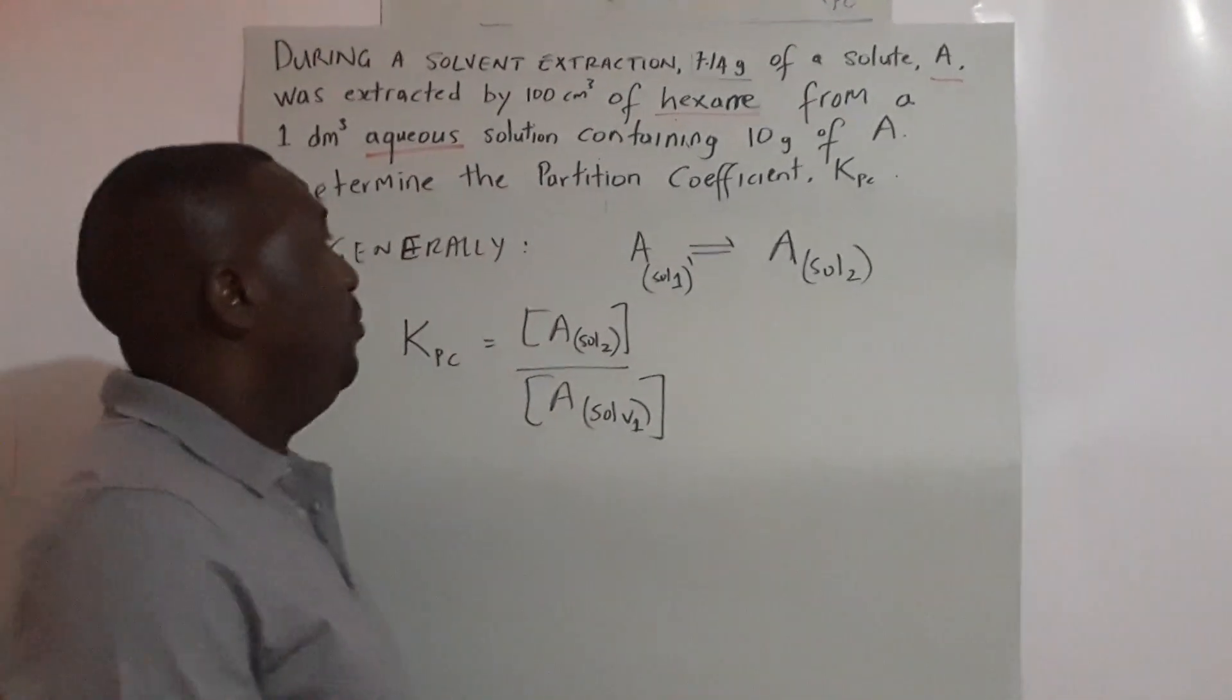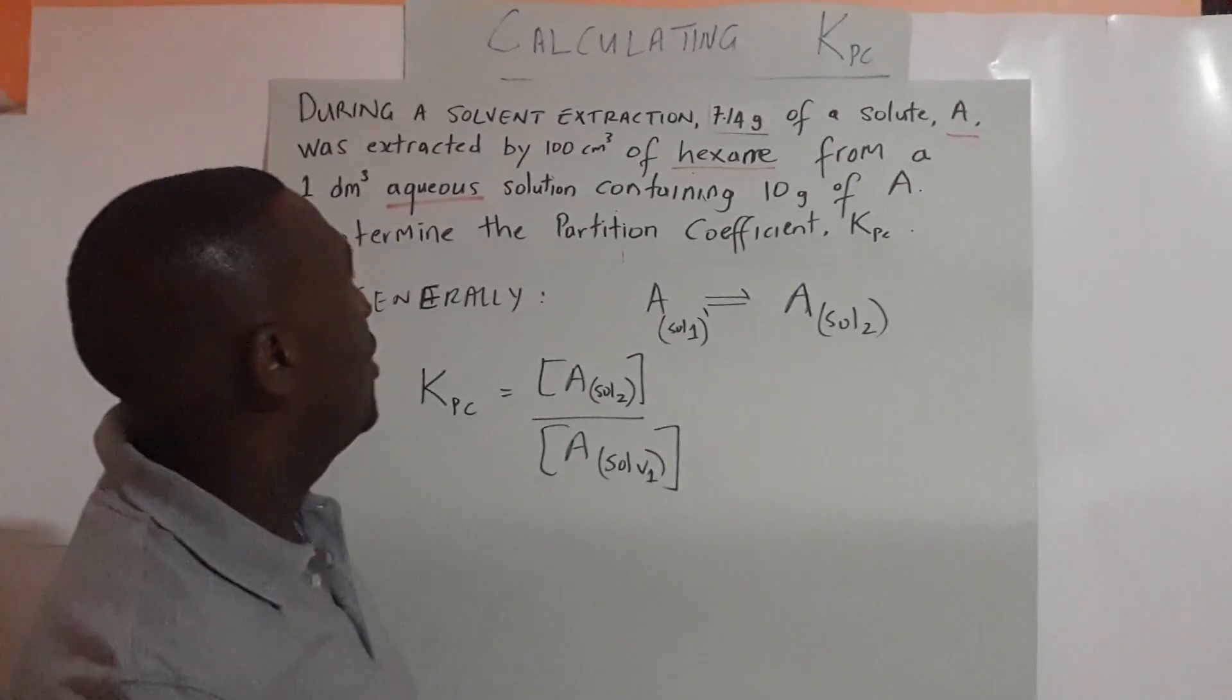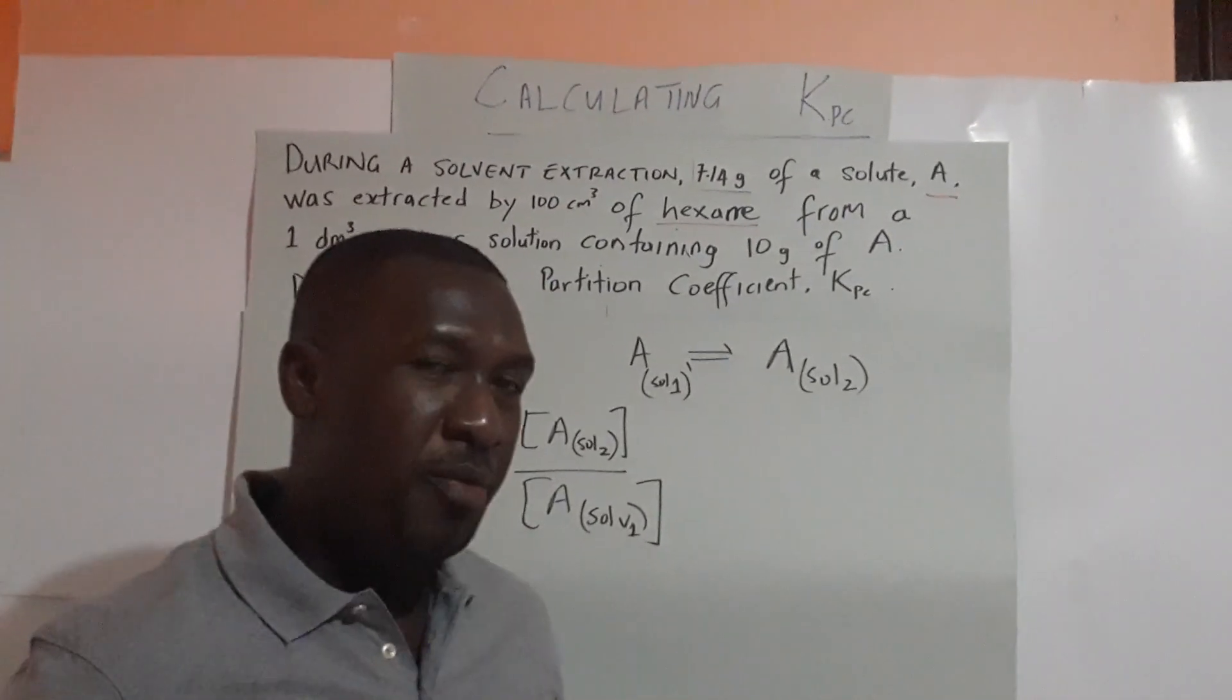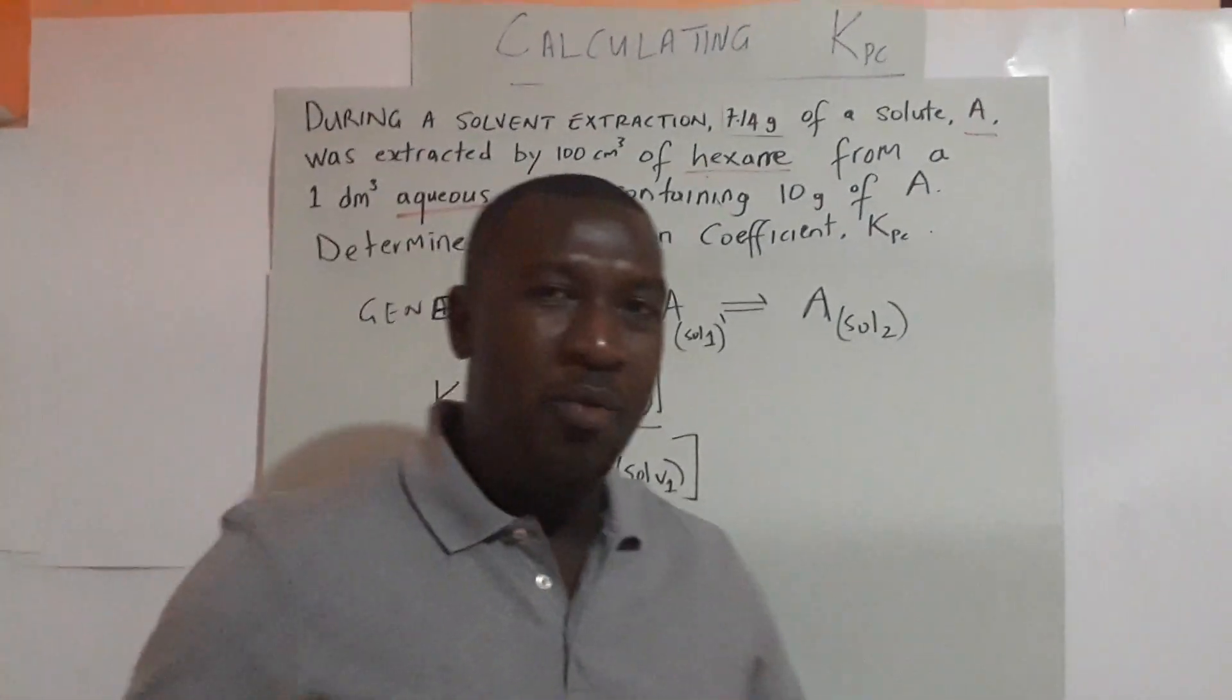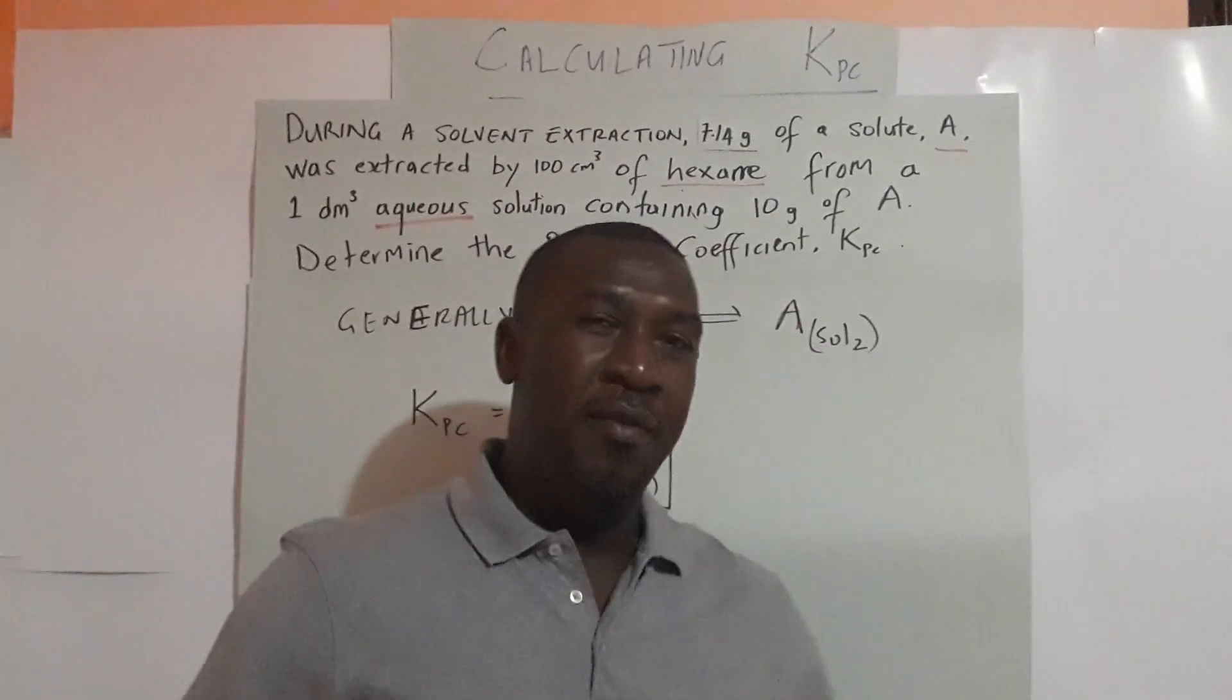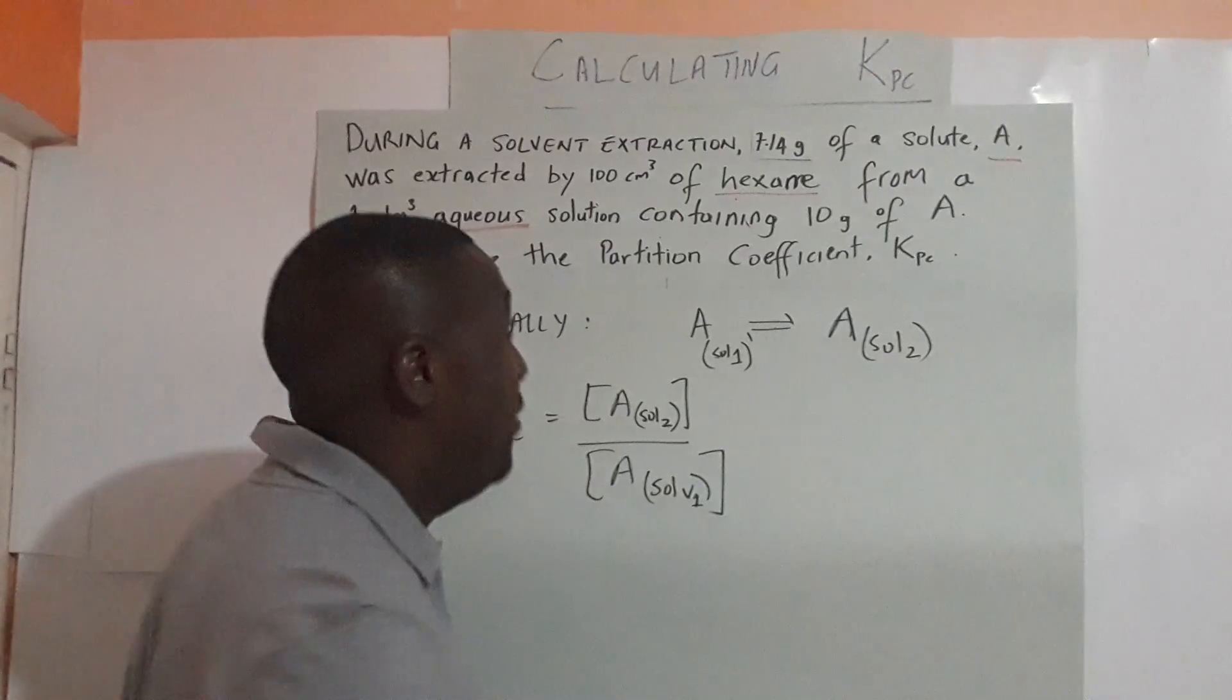Now for our question, solute A is distributed across two solvents: hexane and water. The first thing we have to determine is what is the first solvent and what is the second solvent. The second solvent is the solvent you are using to do the extraction, and the first solvent is where the solute was originally dissolved.